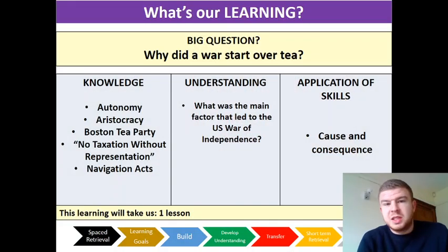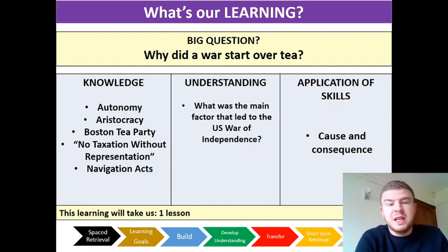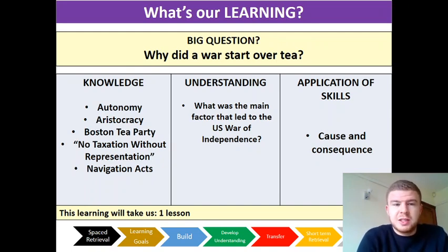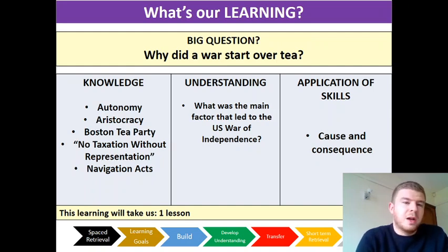So firstly, this is where we are at so far in terms of what we've seen. It might be a good idea to get a pen and paper and have a look at that. Today's lesson title is: why did a war start over tea? These are some of the key words we're going to be looking at today: autonomy, aristocracy, Boston Tea Party, no taxation without representation, and the Navigation Act. We'll come back to those at the end — it might be a good idea to use those key words in sentences to show that you understand them.